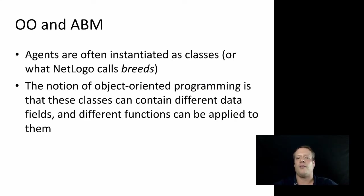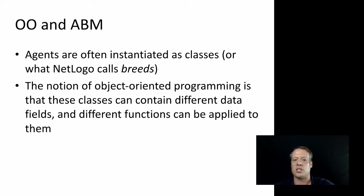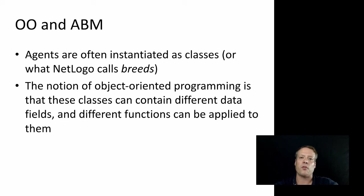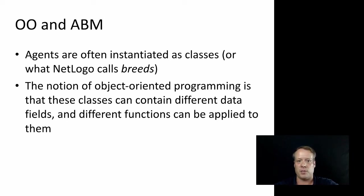This notion that Alan Kay developed has a lot of similarities to agent-based modeling. Agents in any modern agent-based model are often instantiated as classes — so you might have a wolf class and a sheep class. In NetLogo, we call these breeds. The current form of NetLogo basically only allows one level of breeding — turtles and then breeds below that. In some upcoming forms of NetLogo, they're going to have a multi-level program that will allow more namespaces to be generated, giving you a lot more flexibility.